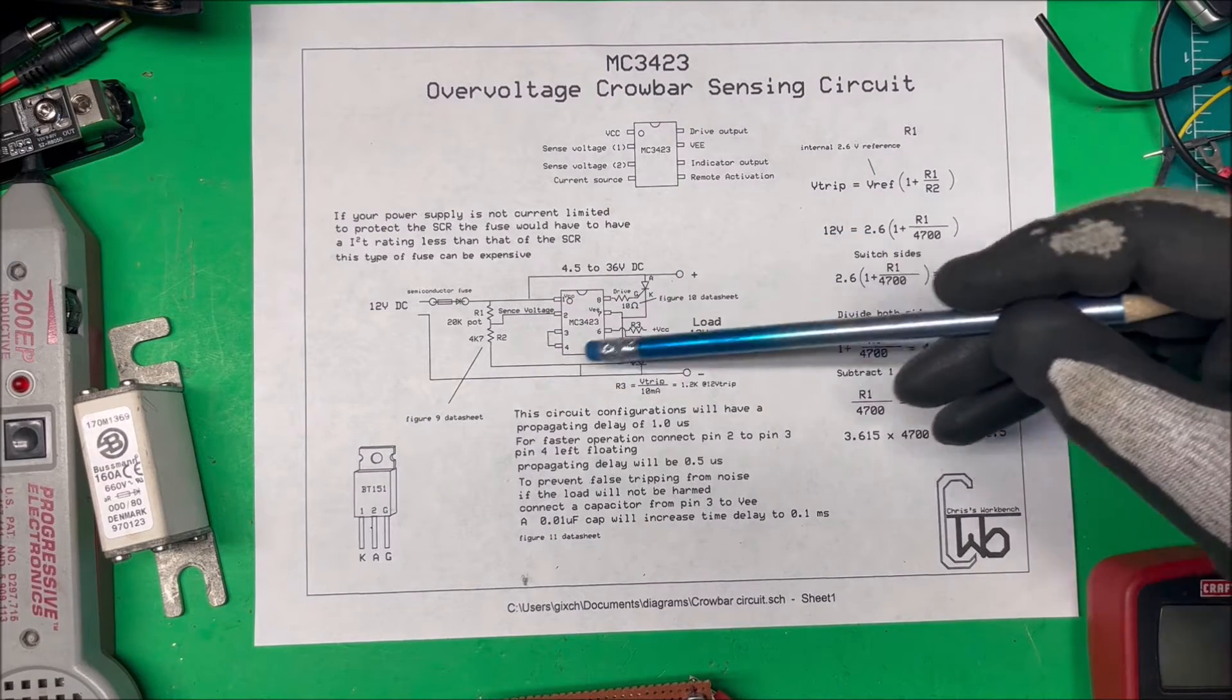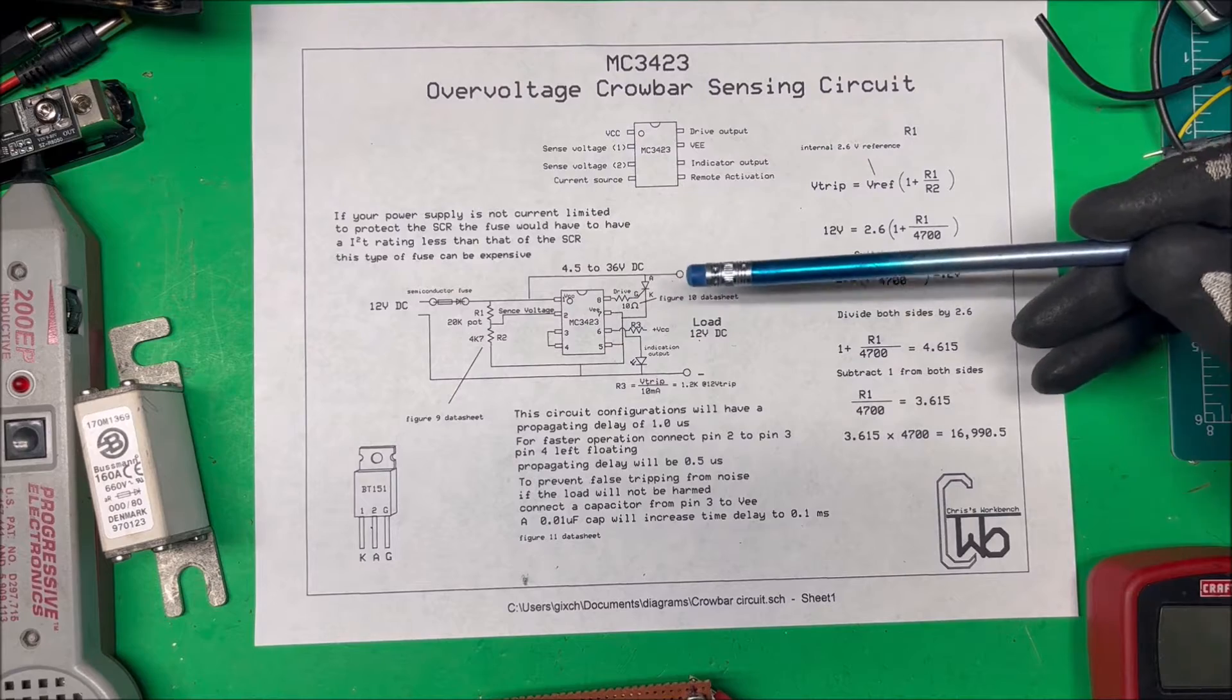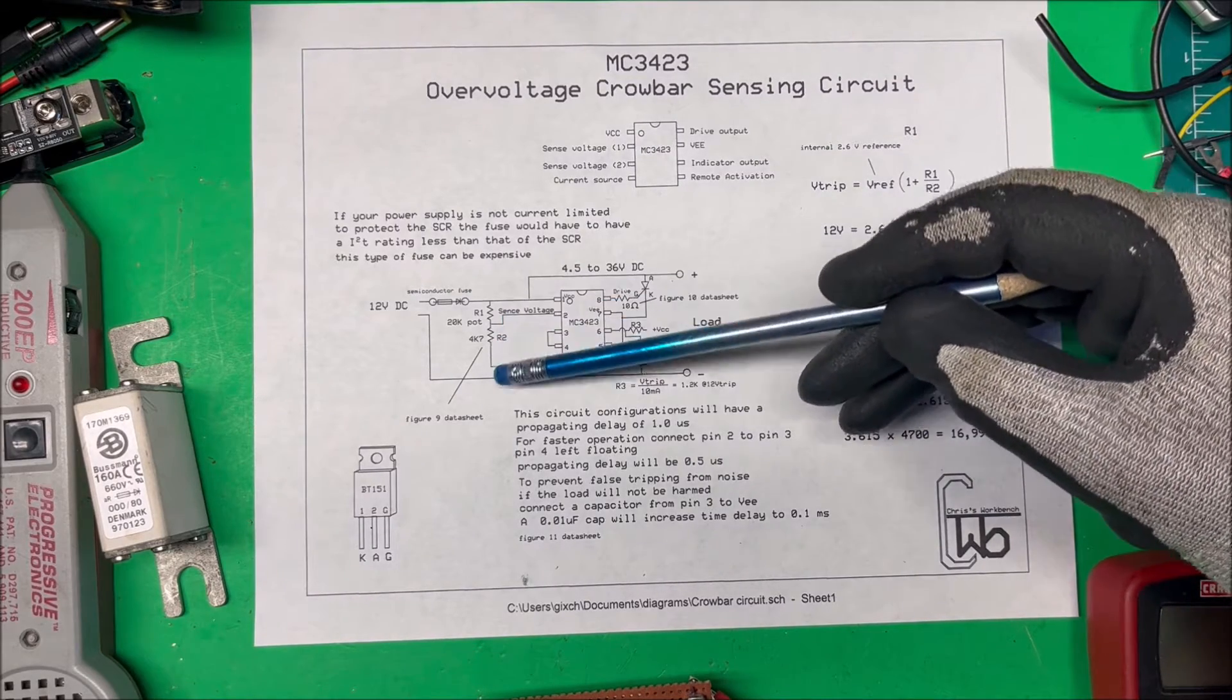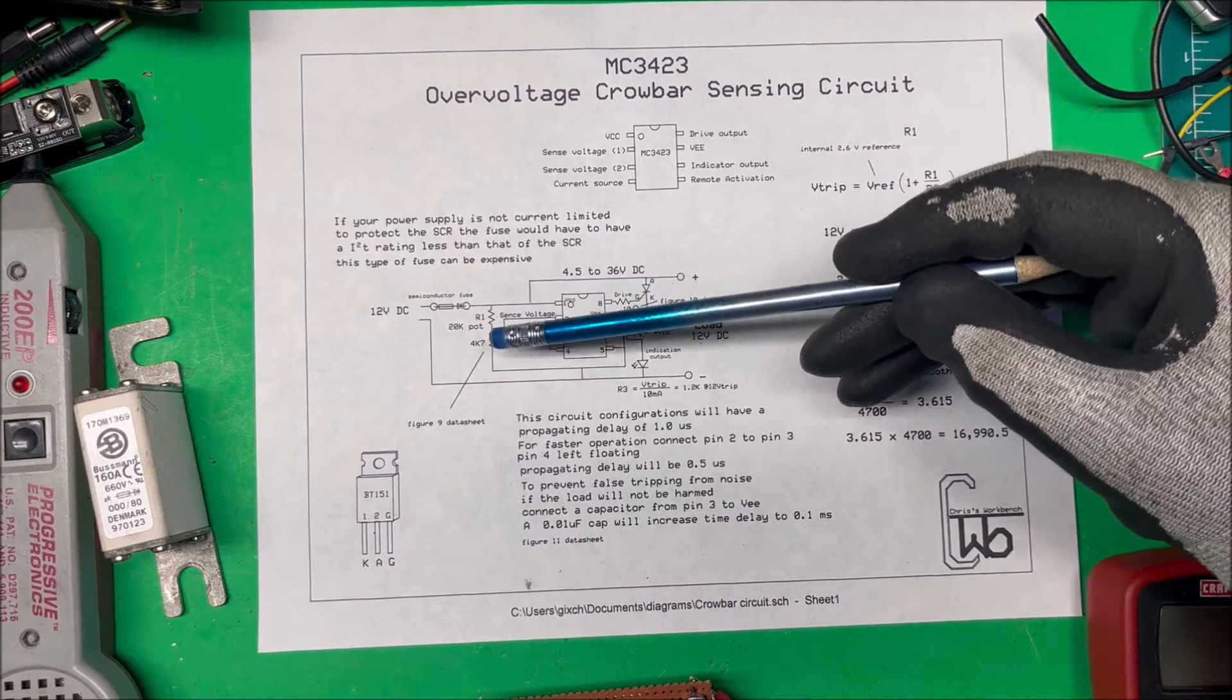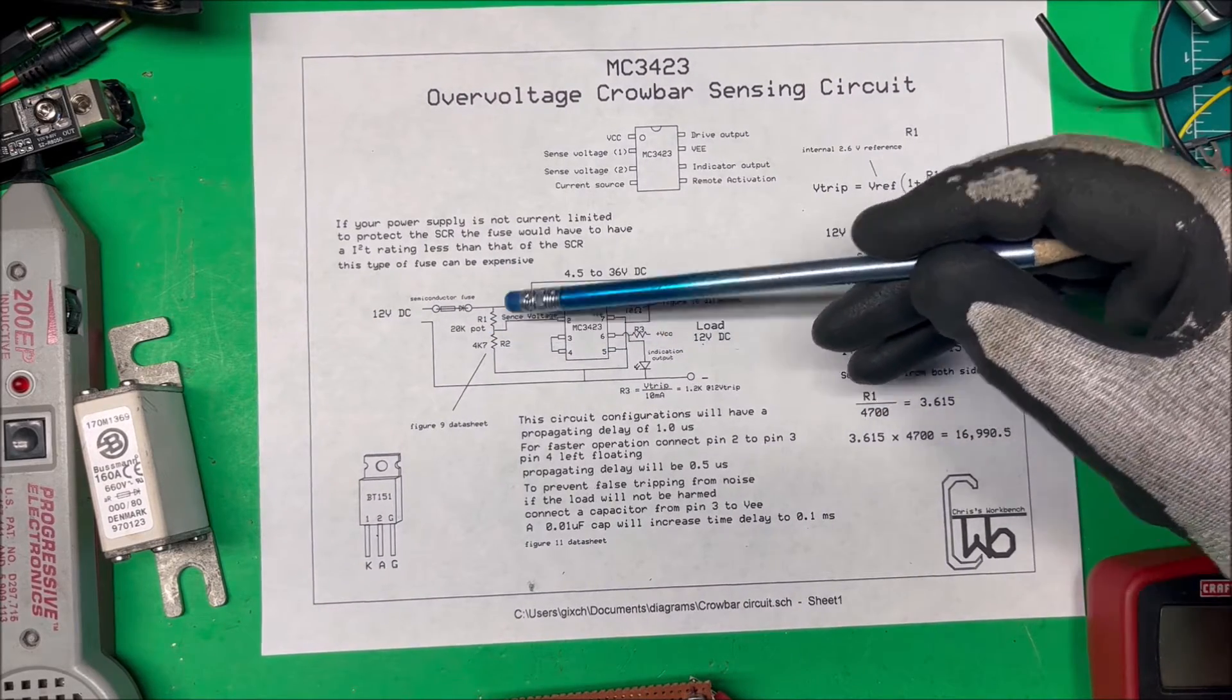How this chip works: it has an internal reference of 2.6 volts. Then we have an external voltage divider from your positive and negative rail here.